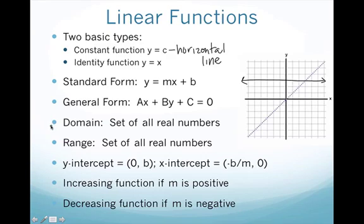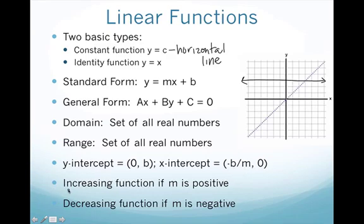Remember we've talked about domain a lot. There is nothing special going on with a line — we don't have a fraction, we don't have a square root — so our domain is going to be the set of all real numbers. Similarly, our range will also be the set of all real numbers. Your y intercept is (0, b) when you've got it in the y equals mx plus b form. Your x intercept can be found using negative b divided by m. A line is always increasing if your slope is positive, and decreasing if your slope is negative.